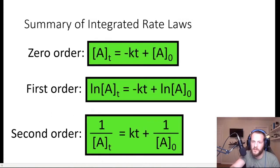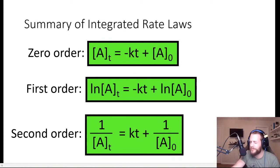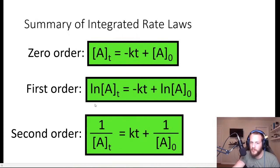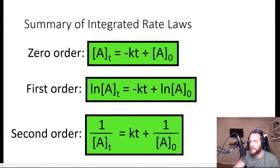We've talked about all three integrated rate law equations. In summary: for zero order, concentration of A at time t equals minus kt plus the initial concentration. For first order reactions, the natural logarithm of the concentration of A at time t equals minus kt plus the natural logarithm of the initial concentration. And for second order, one over the concentration of the reactant at time t equals kt plus one over the initial reactant concentration.